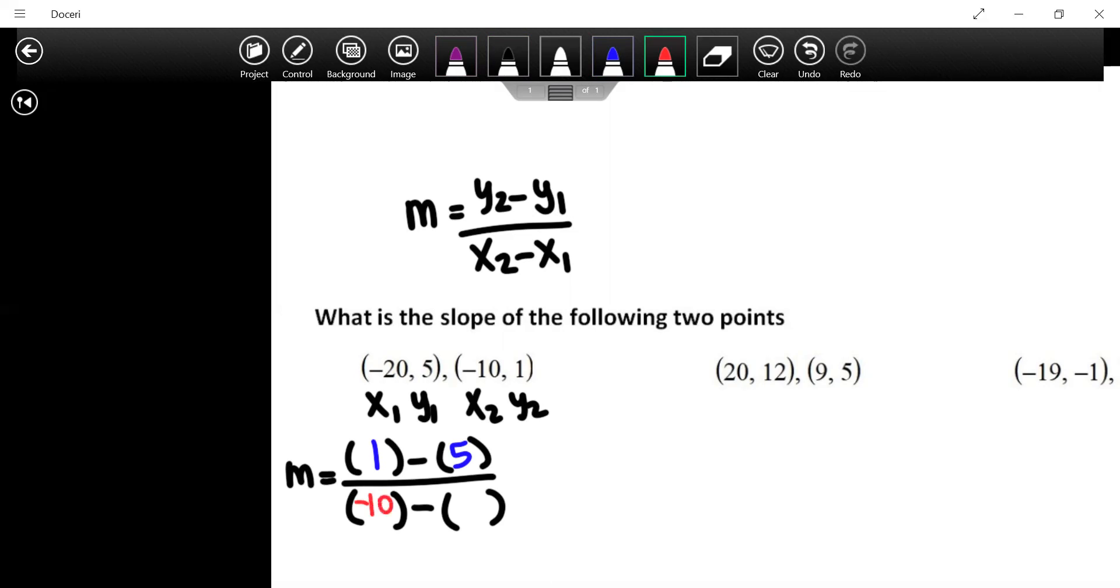My y2 is going to be 1, my y1 is going to be 5, x2 is going to be negative 10, negative 20. It's helpful when you put them in there like that to make sure that your negatives and values are all correct. So when we do this: 1 minus 5 is negative 4. Negative 10 minus negative 20 is keep change flip, which will give me 10.